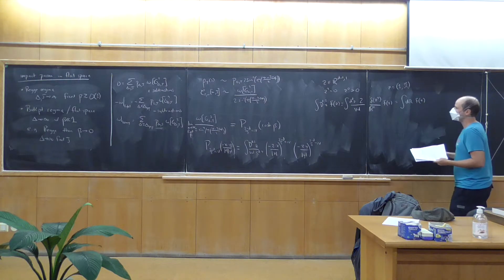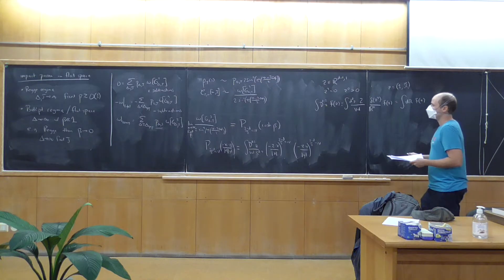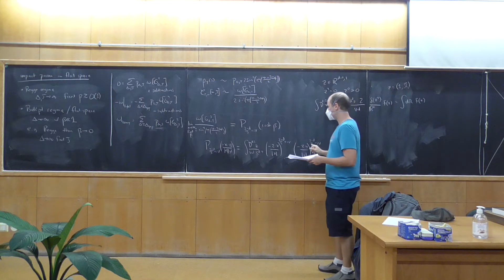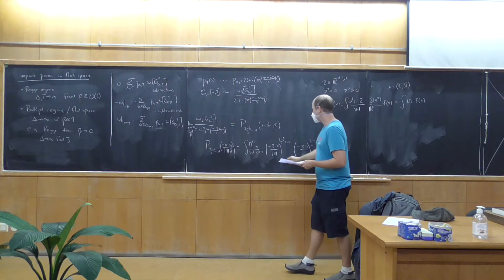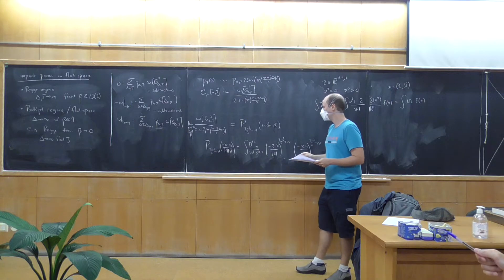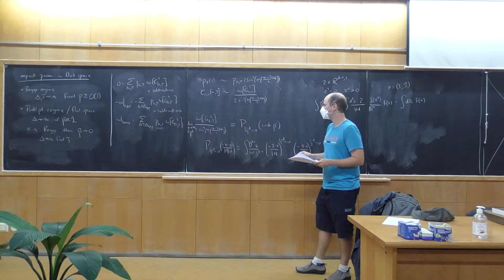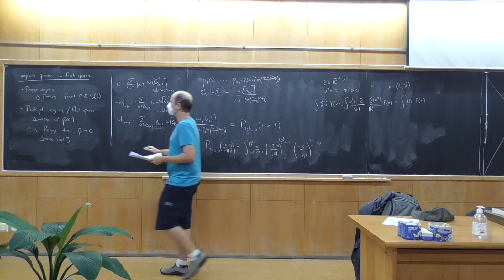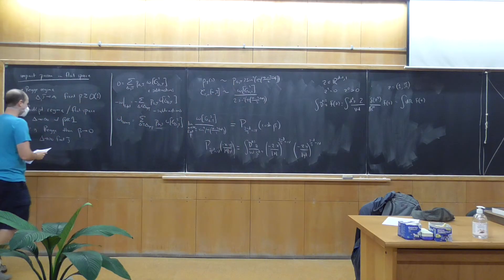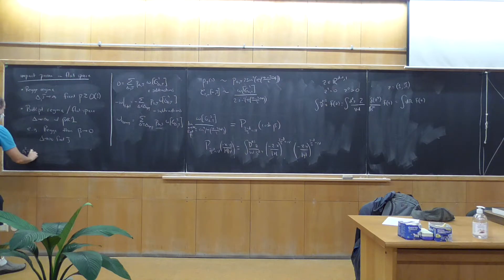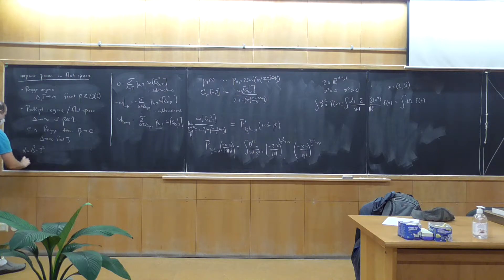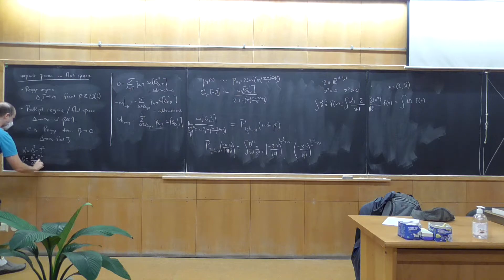A question was raised about notation: when I wrote M → ∞, I should have written delta → ∞. I'll use the definition that M² = delta² − J², and cosh(beta) = (delta² + J²)/(delta² − J²). And nu is going to be the analog of P — the transverse momentum in flat space — while beta is the analog of the impact parameter B.